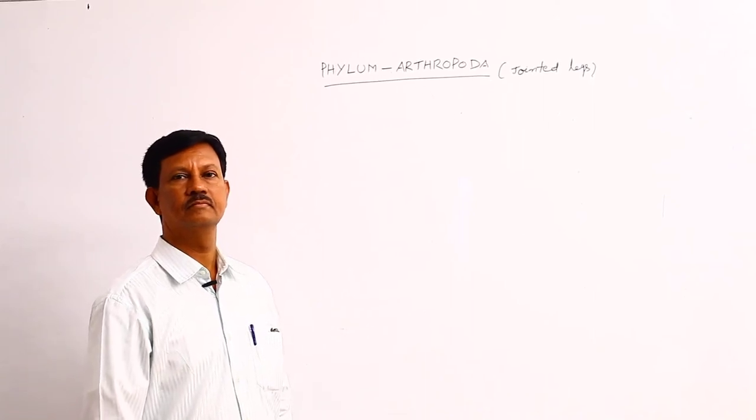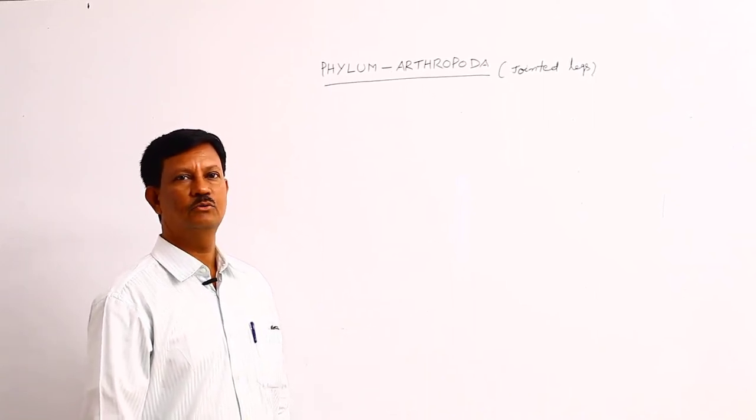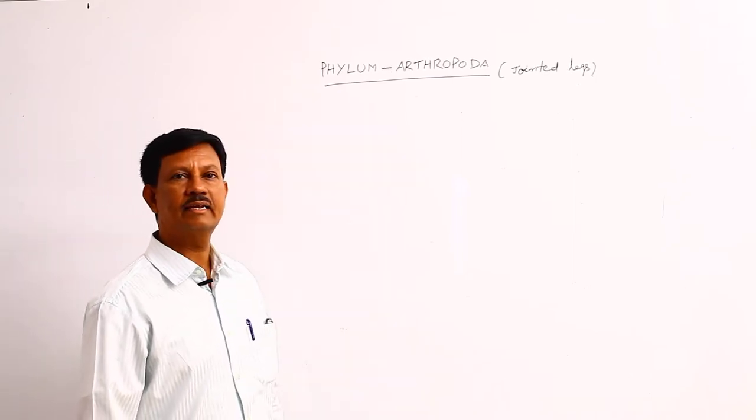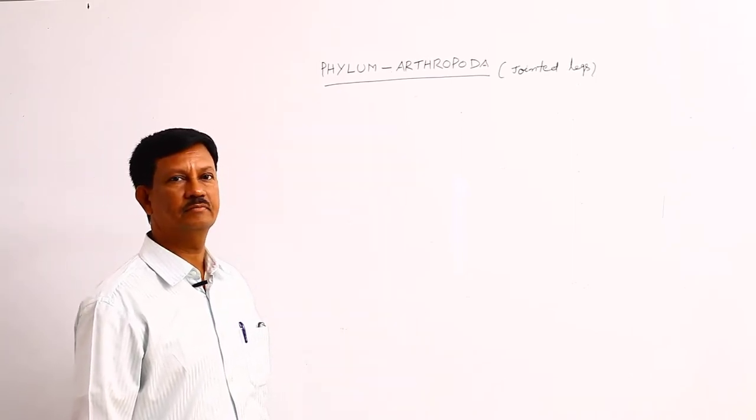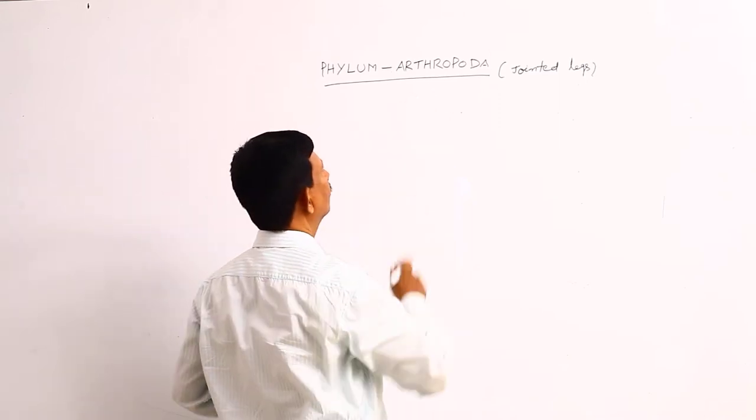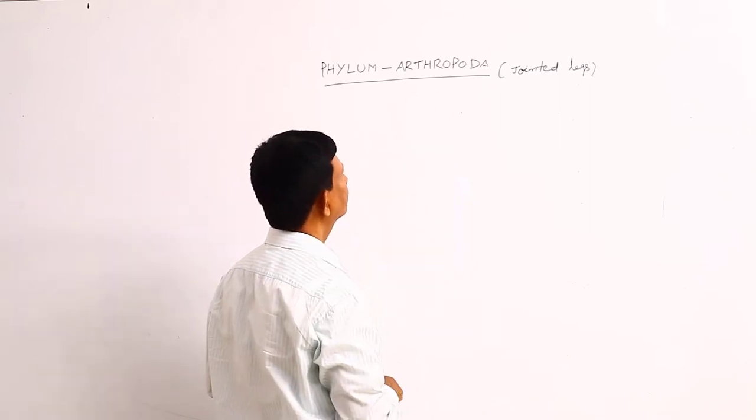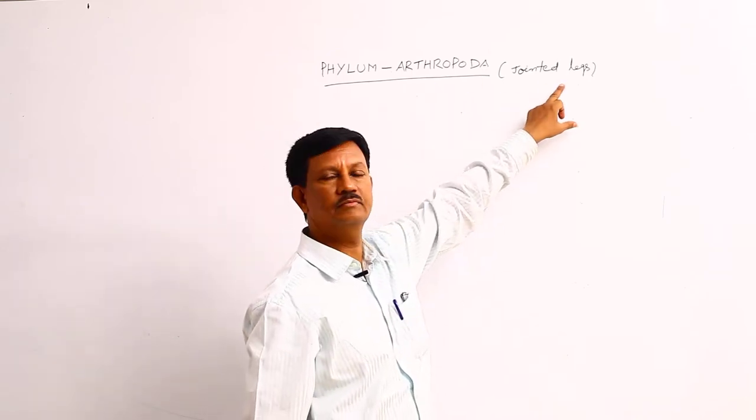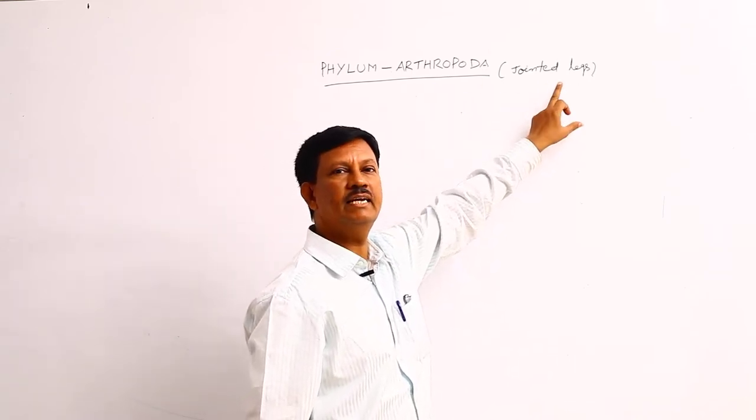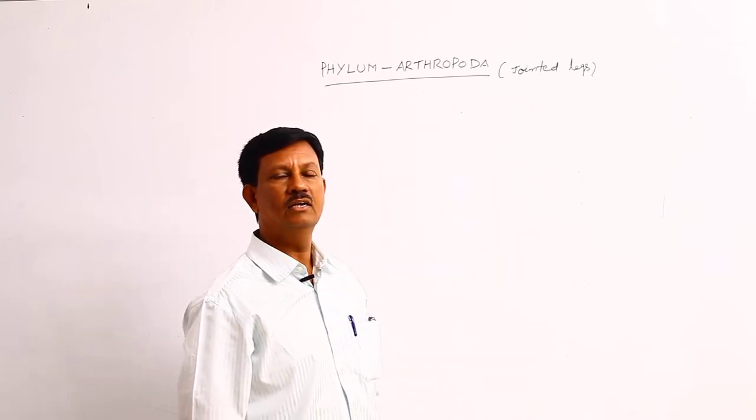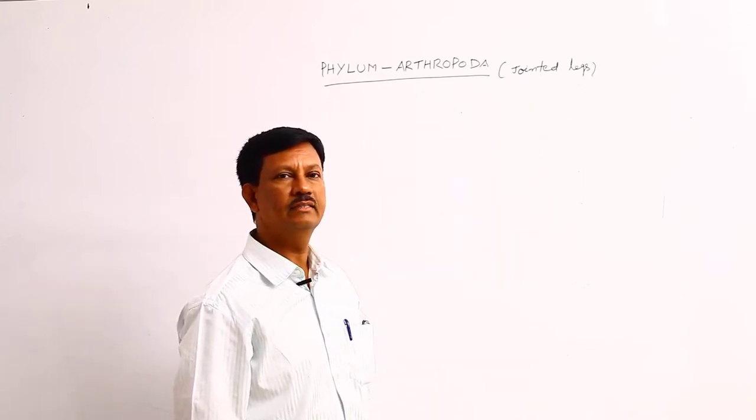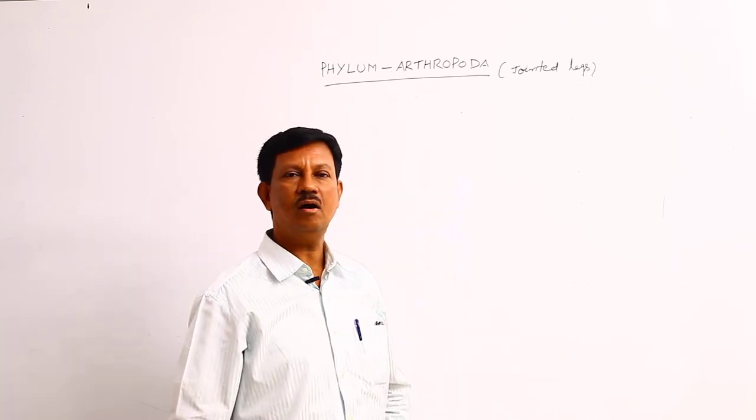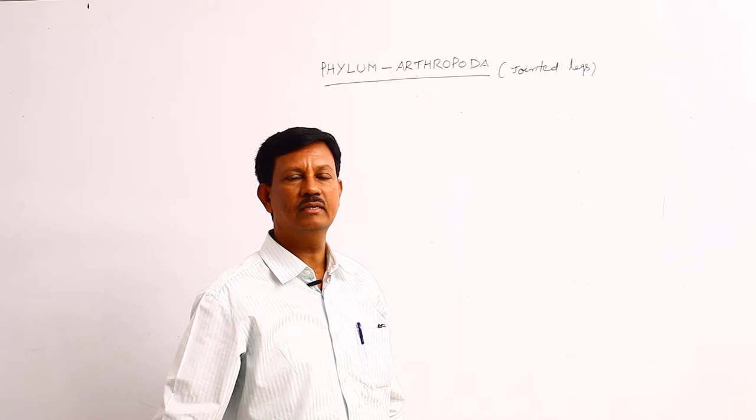Good morning. Today's topic is Phylum Arthropoda - general characters and classification. Arthropoda: 'arthro' means joints, 'poda' means foot. Which animals possess jointed legs? Those animals are included in the Phylum Arthropoda. The name Arthropoda was coined by Von Siebold.